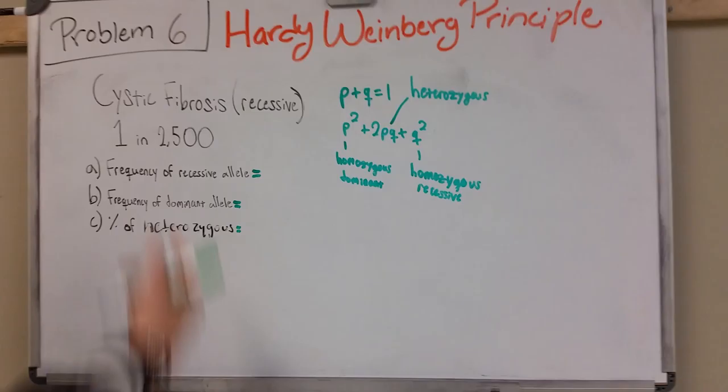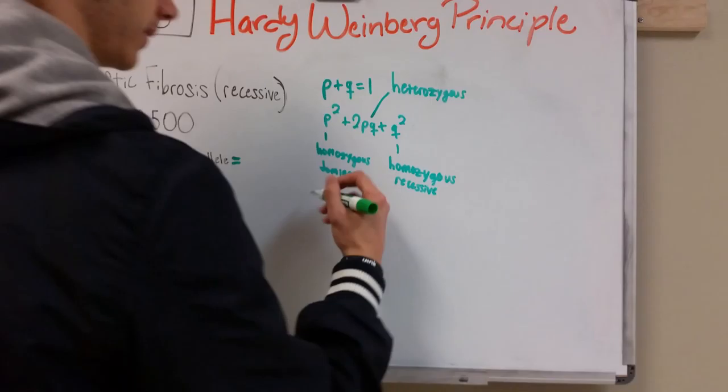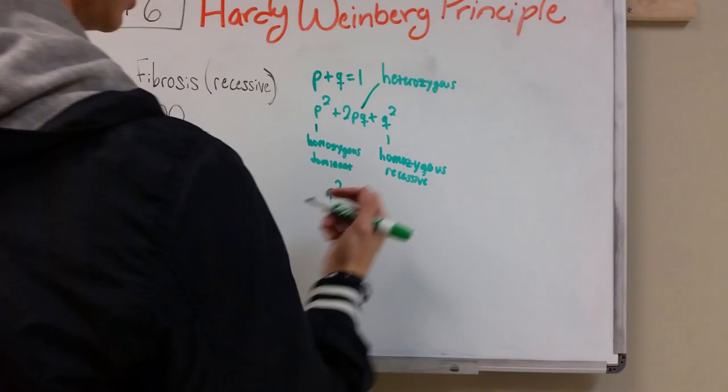So for this problem, 1 in 2,500 would be homozygous recessive. So we can assume that Q squared is going to be 1 divided by 2,500 which is 0.0004.